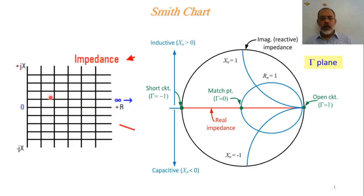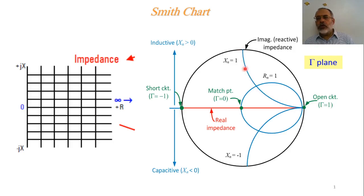Similarly, for a horizontal line where X is constant and equal to positive 1, and R increases from 0 to infinity, the reflection coefficient points correspond to an arc in the gamma plane — this arc corresponds to constant X equal 1, while the circle corresponds to constant R equal 1. Everything on the Smith chart is normalized, so X and R are both normalized values.